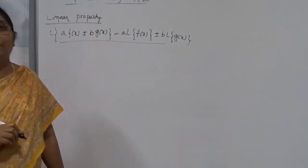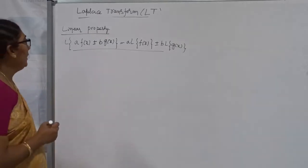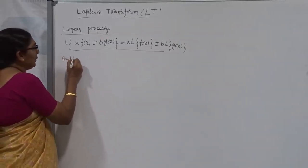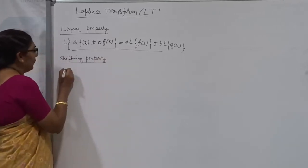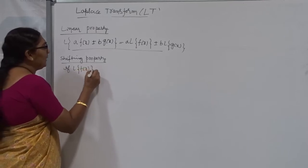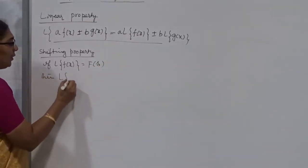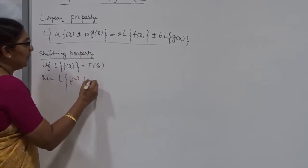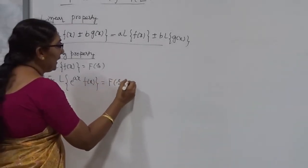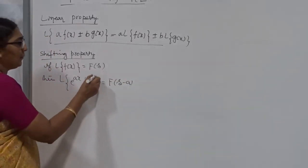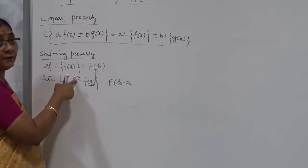This linear property is very useful when you have more than one term and you are finding the Laplace Transform. The next property is the shifting property, which is also very important when solving a problem. In the shifting property, if Laplace Transform of f(x) is equal to F(S), then the Laplace Transform of the product of an exponential with any function is F(S − a), where a is the coefficient of x in the exponential.